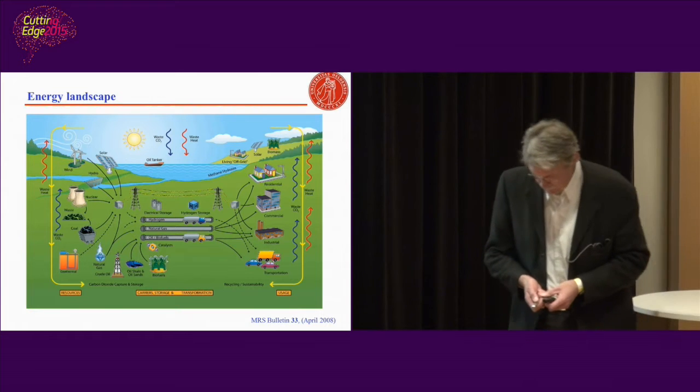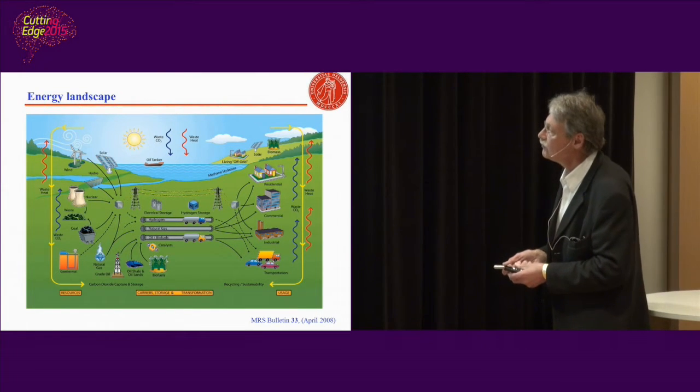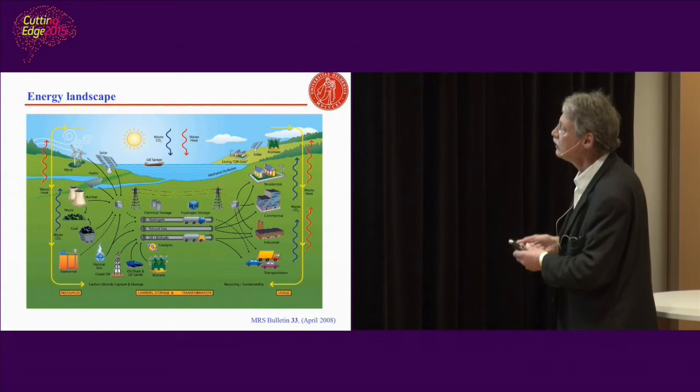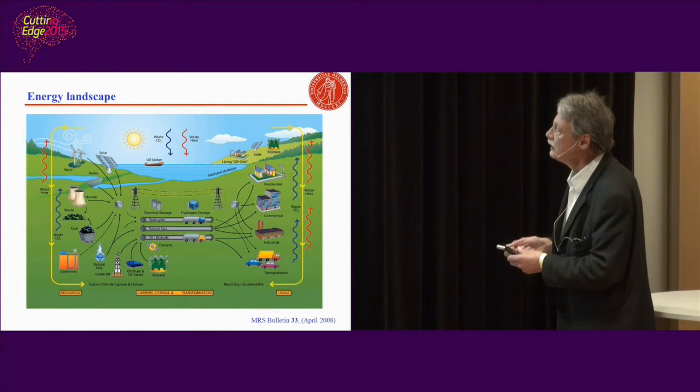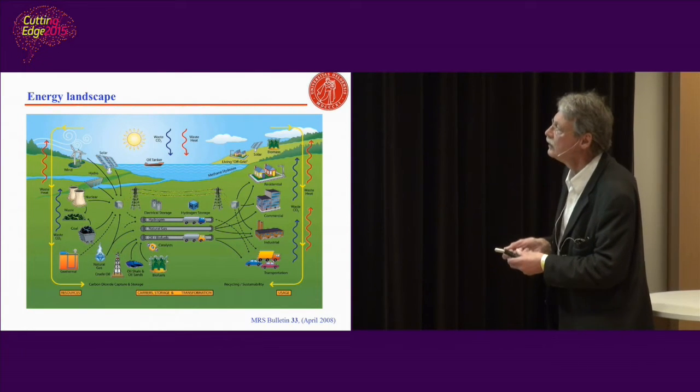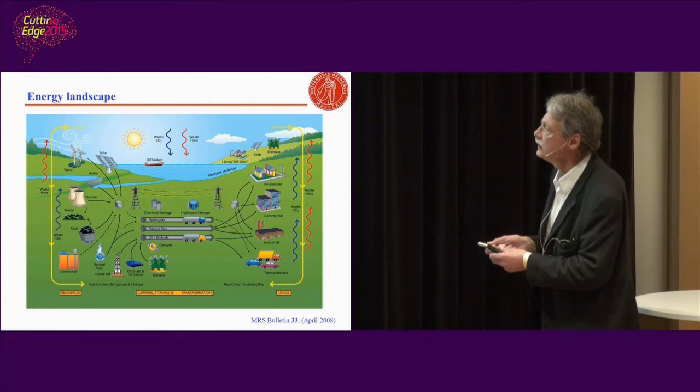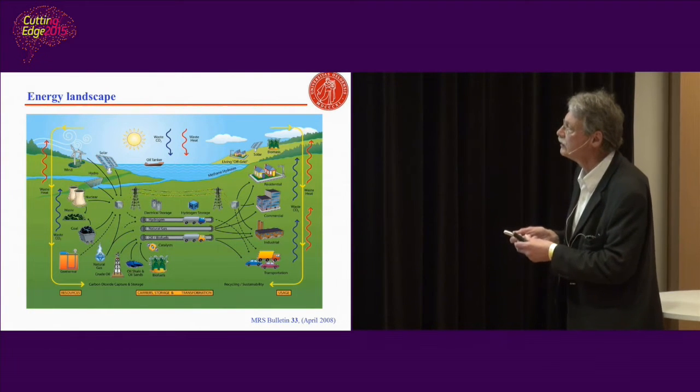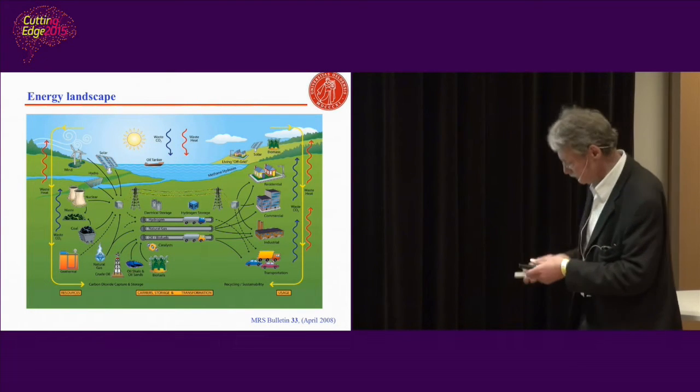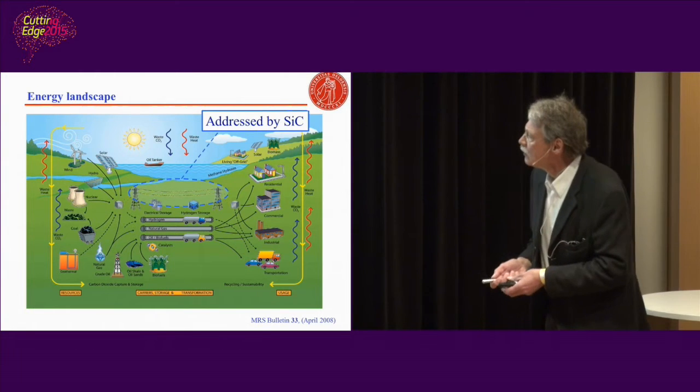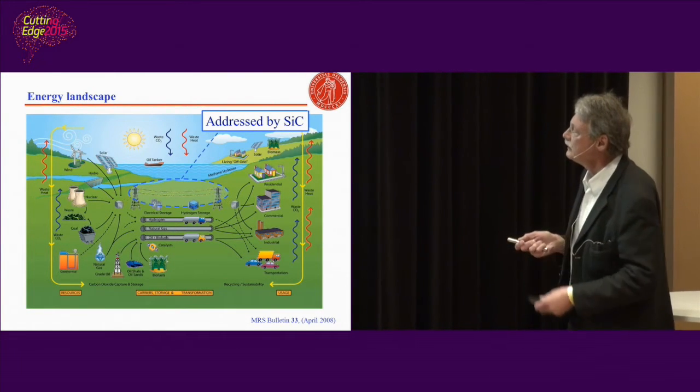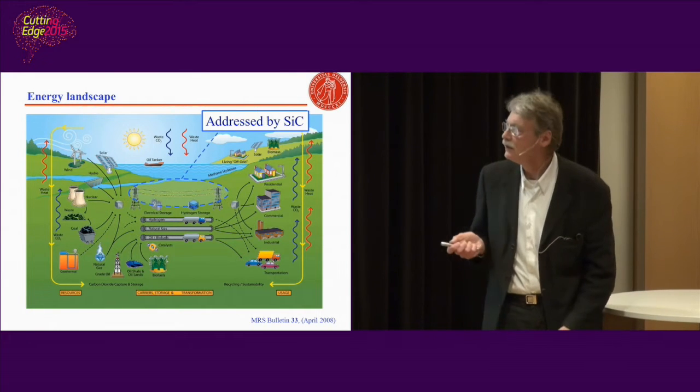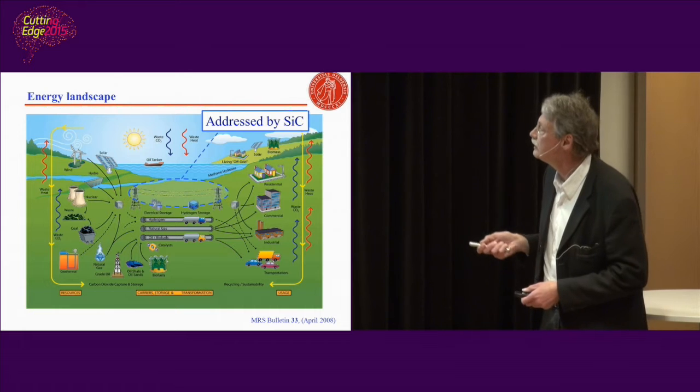If you look now on the energy landscape, what we do have - on this side we have all these ways that we produce energy. Here we have all the ways that we consume energy. And most of these here are connected to a grid. This can be renewable energy, fossil power plants and whatever. It can be PV, it can be wind. We can also have off-grid things. What we are going to address by silicon carbide today is this part here, where we distribute and transmit the electrical power, and how much energy can be saved in this part.